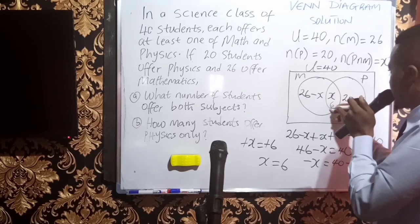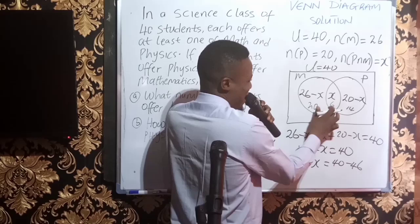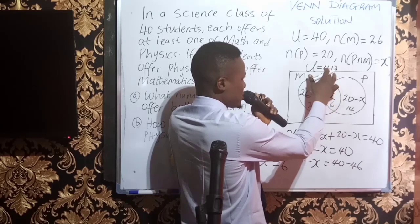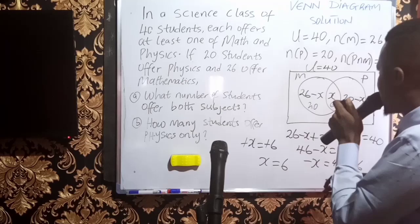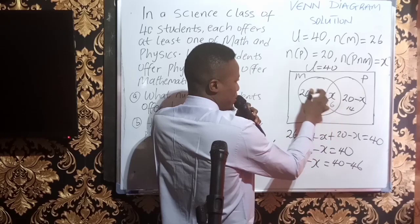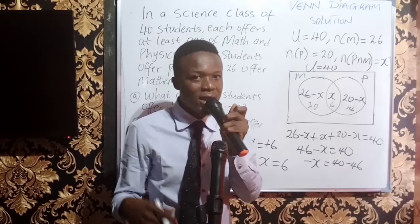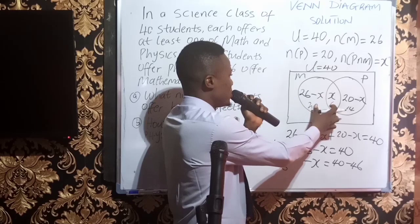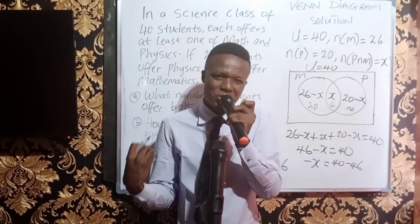With X equal to 6: 26 minus 6 gives 20 for math only, and 20 minus 6 gives 14 for physics only. You can verify: 20 plus 6 plus 14 equals 40. So 14 students offer physics only, and 20 students offer math only. If asked for physics only, the answer is 14; for math only, it is 20.